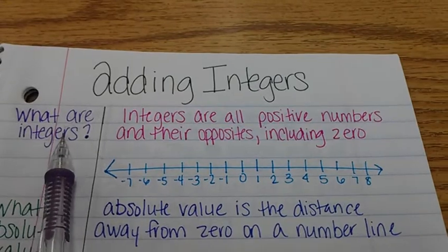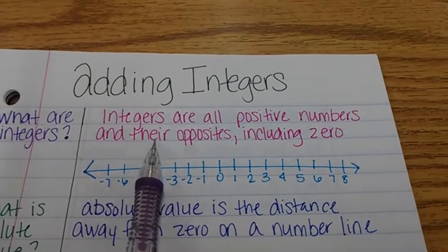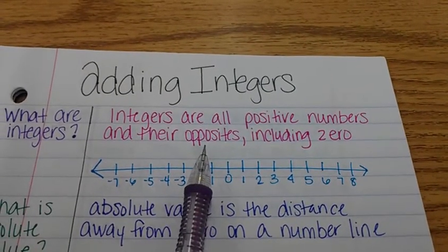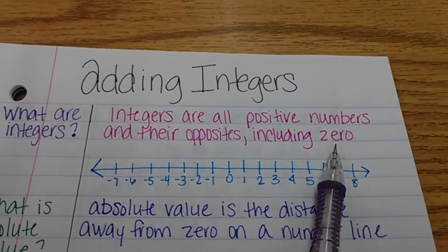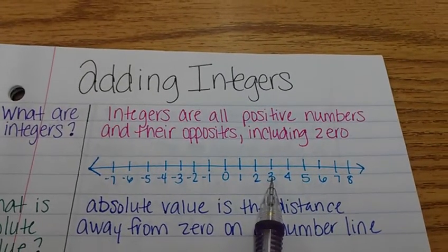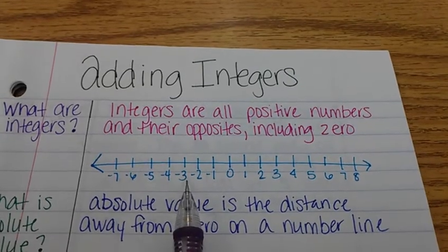Let's start off with what are integers. Integers are all positive numbers and their opposites including zero. So what does that mean? Three is a whole number. Its opposite is negative three.